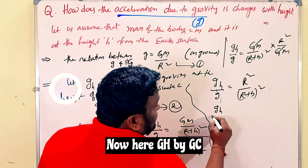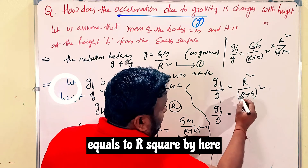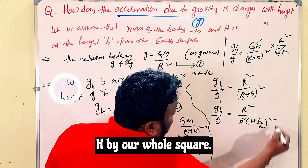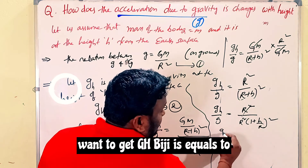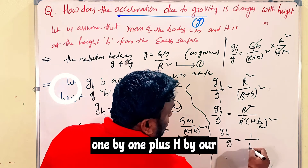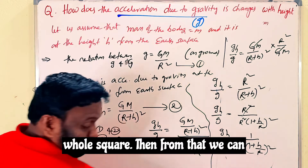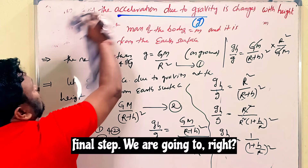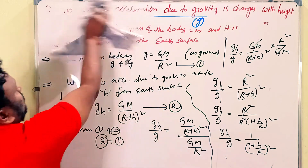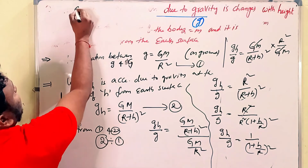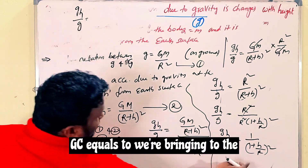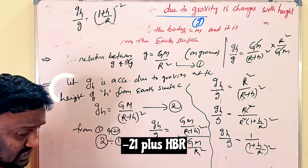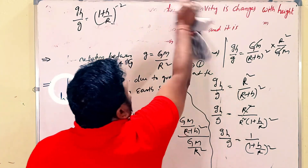Now gh/g = R²/(R+h)². We take R² as a common factor from the denominator: gh/g = 1/(1 + h/R)². So gh/g equals (1 + h/R) raised to the power of minus two.